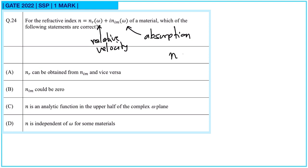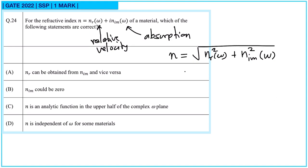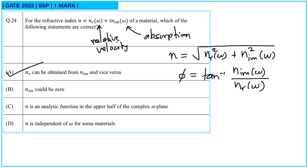From the complex refractive index, we can calculate |n| = sqrt(n_r(omega)^2 + n_im(omega)^2), and also phi = tan_inverse(n_im(omega)/n_r(omega)). This comes from basic understanding of complex numbers. So if any one of the terms is known — if n_r is known, then we can calculate n_im. Therefore option A is correct.